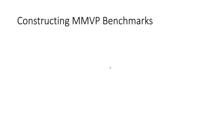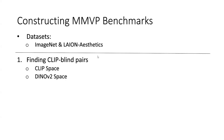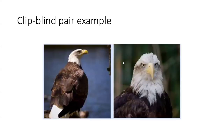Now let's talk about how they construct their MMVP benchmark. They select images from ImageNet and Lion Aesthetics datasets. The first step is finding CLIP-blind pairs using a CLIP encoder and a DINOv2 encoder. A CLIP-blind pair consists of two images that are semantically similar but visually different. For example, two images both contain an eagle, but on the semantic level they look the same to CLIP, while on the pixel level they differ — one taken from a farther perspective with the eagle facing right, the other up close with the eagle facing the camera.